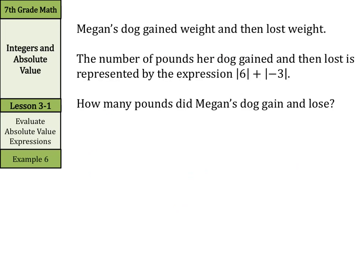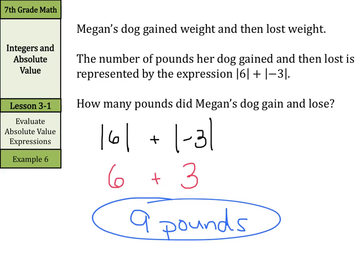Megan's dog gained weight and then lost weight. The number of pounds her dog gained and then lost is represented by the expression the absolute value of 6 plus the absolute value of negative 3. How many pounds did Megan's dog gain and lose? Well, this is simply the absolute value of 6 plus the absolute value of negative 3. Now do not add these first. Take care of the absolute value signs. The absolute value of 6 is 6 plus the absolute value of negative 3 is 3. And 6 plus 3 is 9 pounds. And that's our final answer. Good luck.